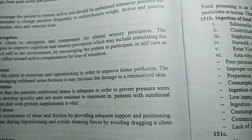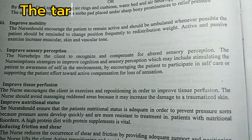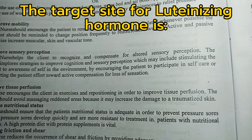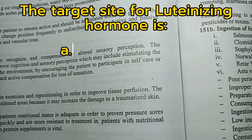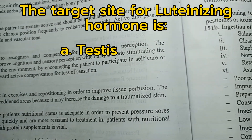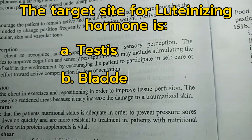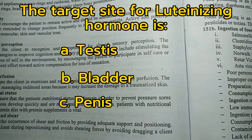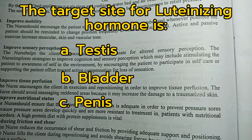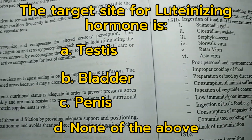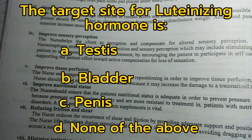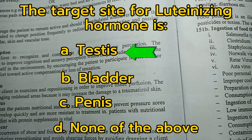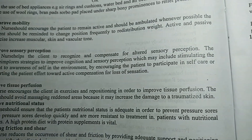Number 11. The target site for luteinizing hormone is: A. Testis, B. Bladder, C. Penis, D. None of the above. Answer: A. Testis.